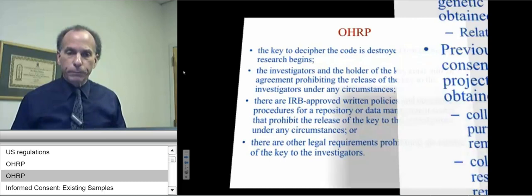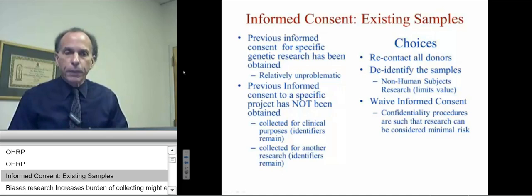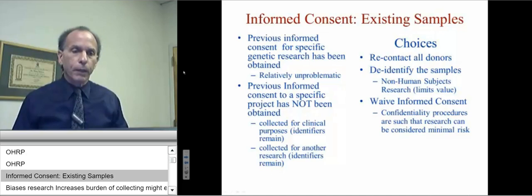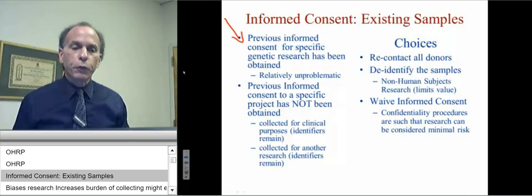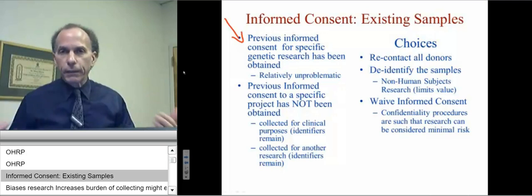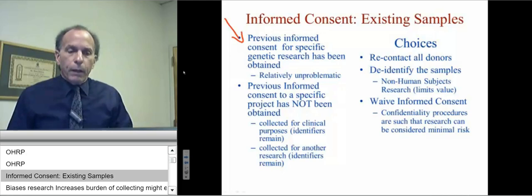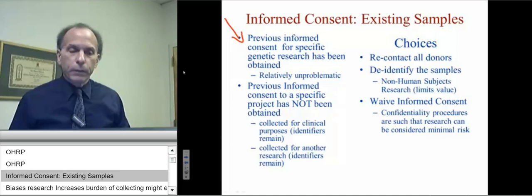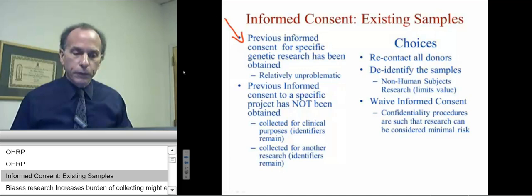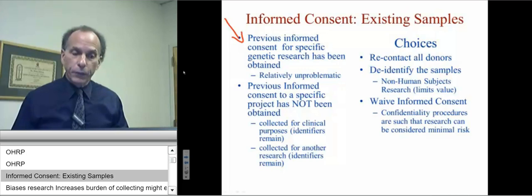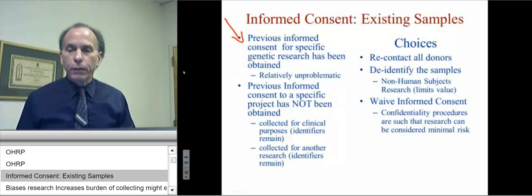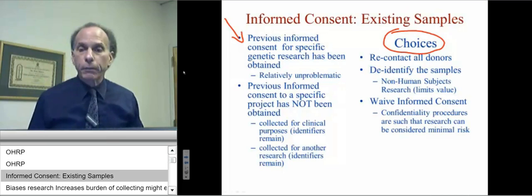This slide shows the landscape for informed consent regarding existing samples. If previous informed consent for a specific genetic research has been obtained, then this situation is relatively unproblematic. However, if previous informed consent for a current specific project had not been obtained — for example, samples were previously collected for clinical purposes and the identifiers remain, or collected for another research study and the identifiers remain — then informed consent has not been obtained for the current research project.